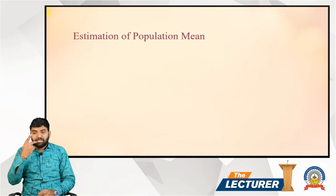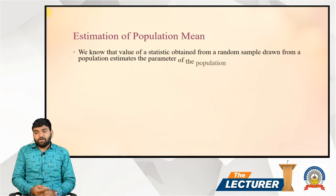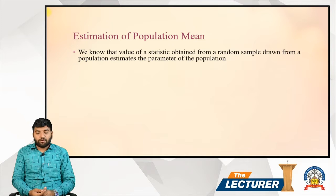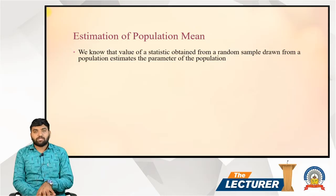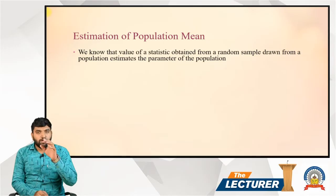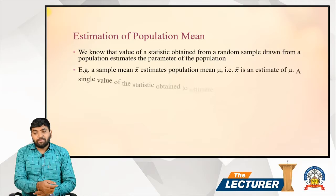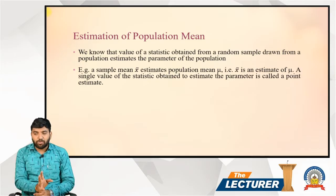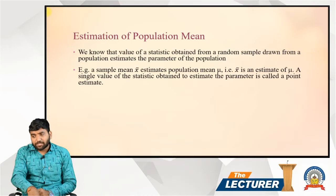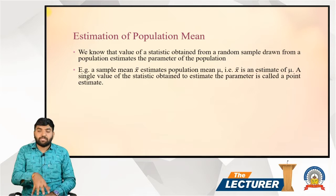Estimation of population mean: We know that the value of a statistic obtained from a random sample drawn from a population estimates the parameter of the population. For example, a sample mean x-bar estimates the population mean mu — that is, x-bar is an estimator of mu.